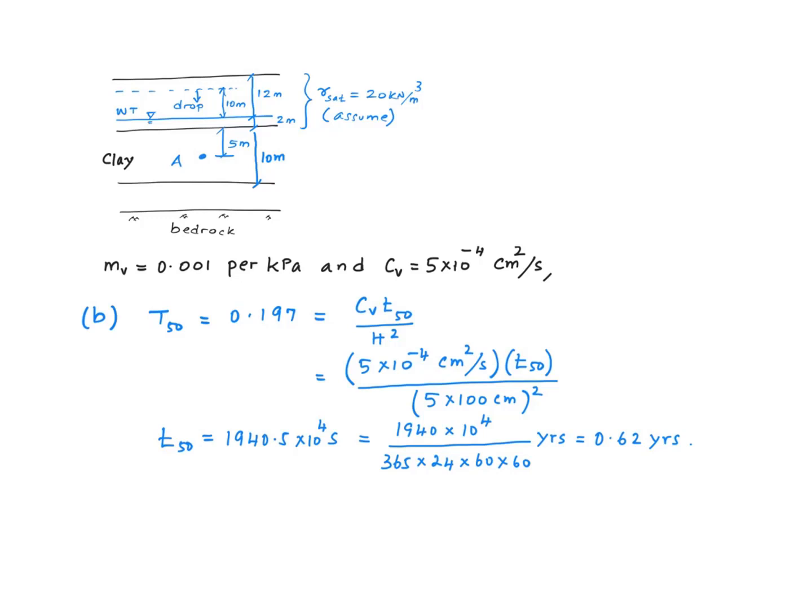But you want to convert that into centimeters to be consistent with the units we are using for c sub v. So you multiply that by 100 and then square it. From this equation, t 50 is calculated to be 1940.5 times 10 to the 4 seconds. And you convert that into years. And I get 0.62 years out of that.